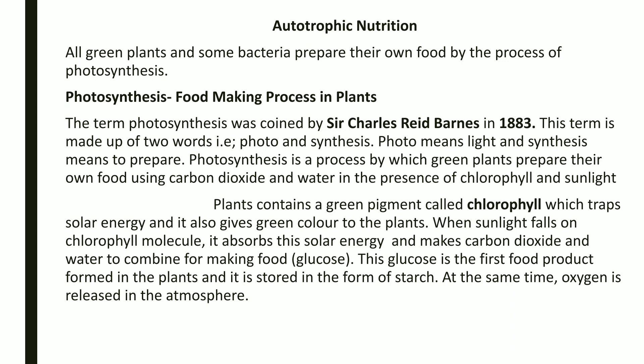Autotrophic organisms make their own food; their nutrition is called autotrophic nutrition. The process by which they make food is called photosynthesis. This word 'photosynthesis' was given by Sir Charles Reed Burnus in 1883, and is made up of two terms: 'photo' meaning light, and 'synthesis' meaning to make or prepare.